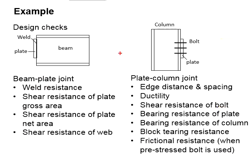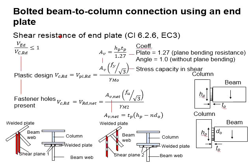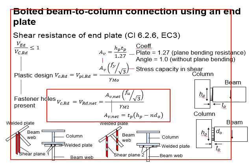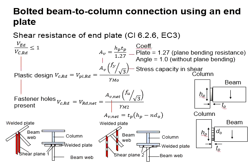Then you need to check for the shear resistance of the plate net area. This again refers to this slide based on the formula here as represented by the diagram here. We are talking about the shear plane passing through the bolt hole. And there will be 2 shear planes here.